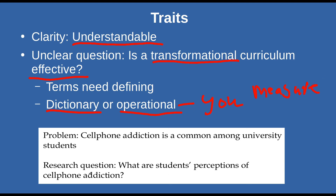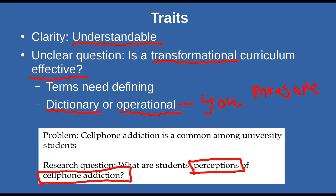Going back to our cell phone addiction example, one of the problems with that research question out of context is: what do we mean by 'cell phone addiction'? That might not be clearly defined. For some people you might also want to explain what you mean by 'perceptions.' And for those who are really specific: what kind of students are you talking about? University students? High school students? Graduate students? Freshmen only? All undergrad? These things have to be specified.